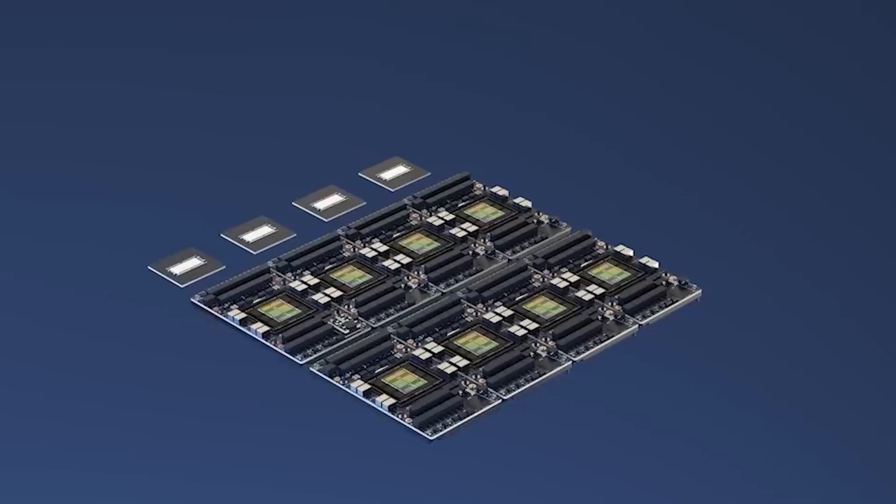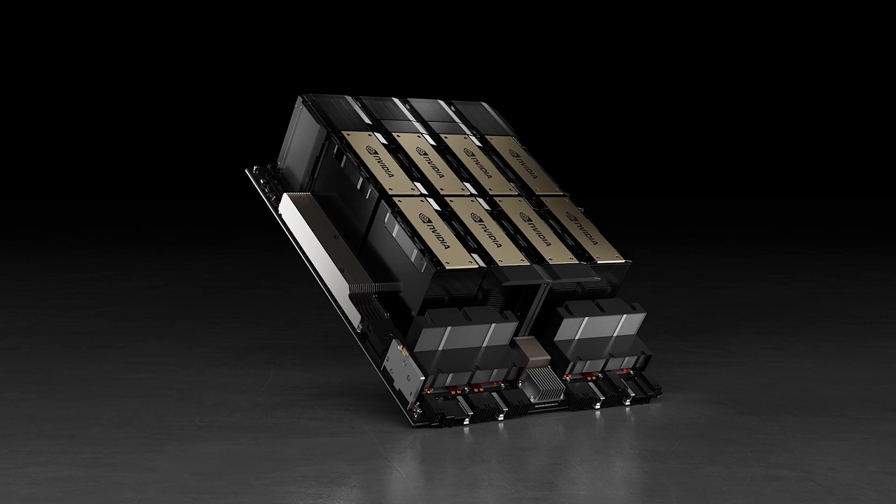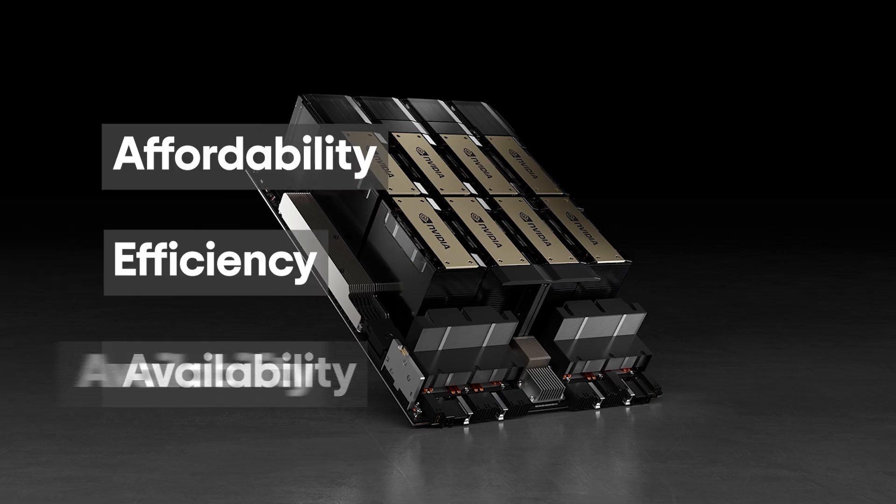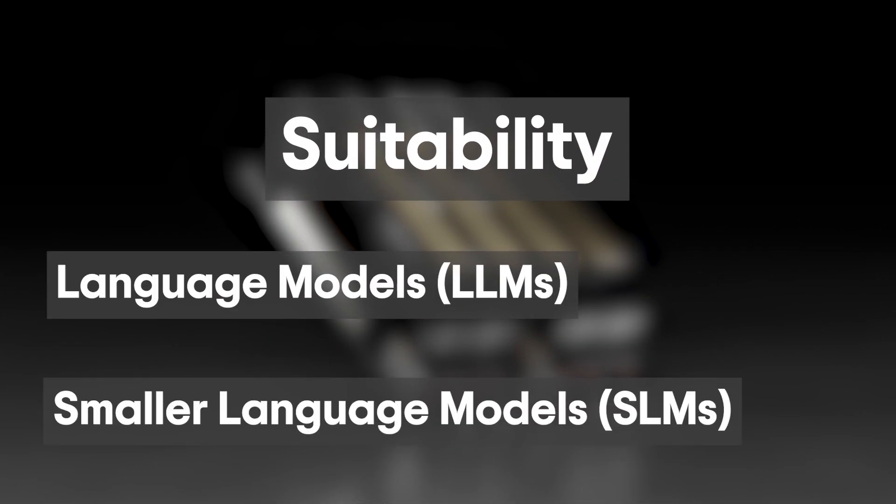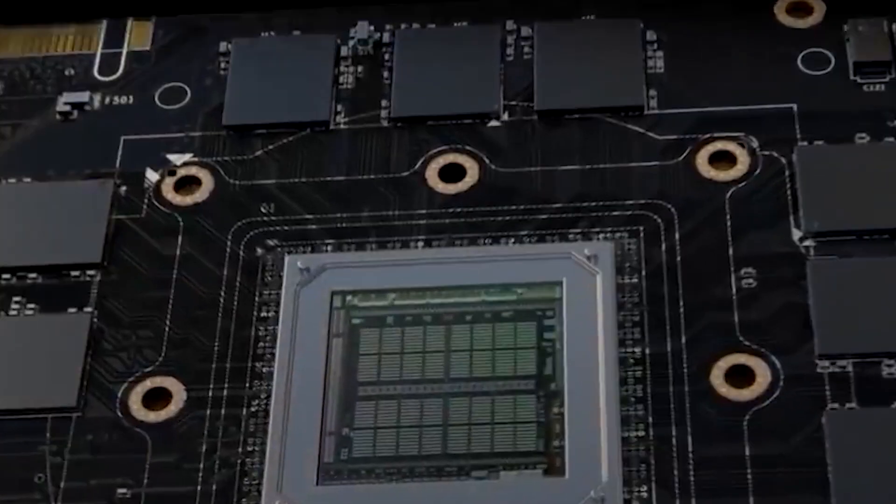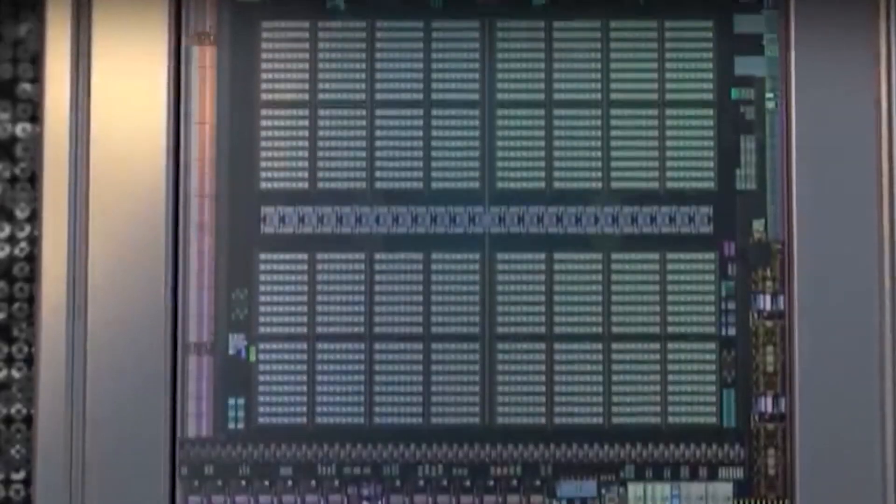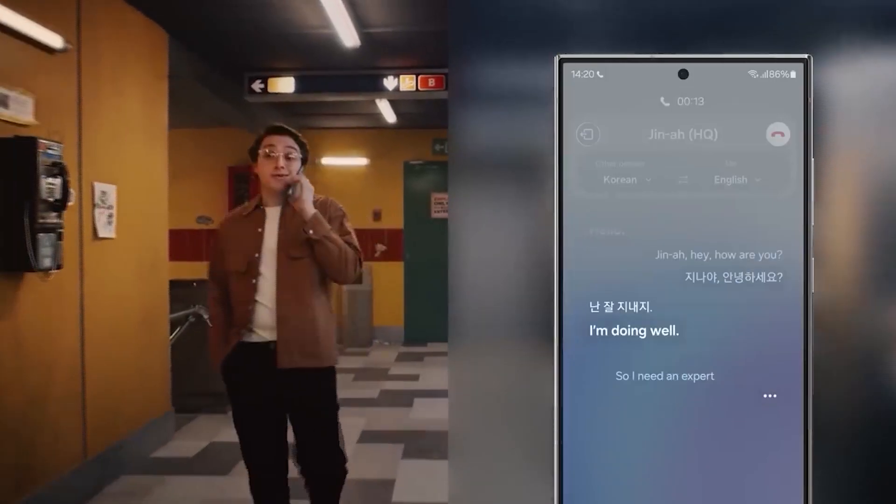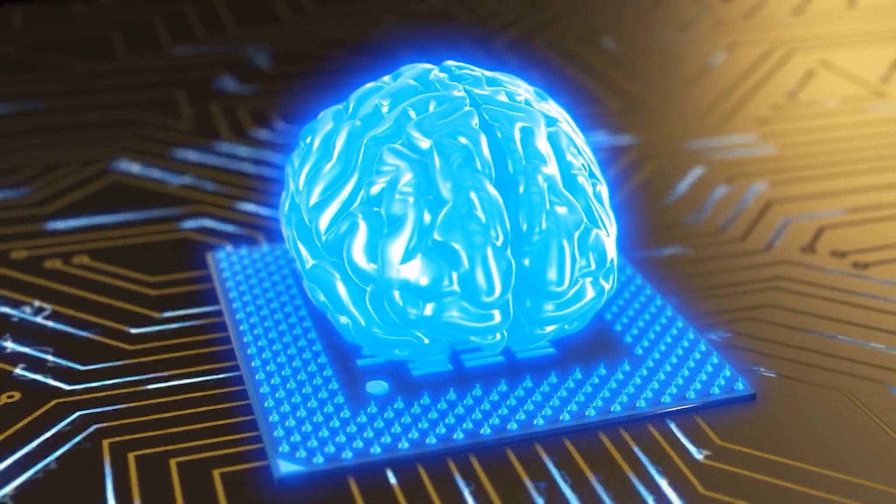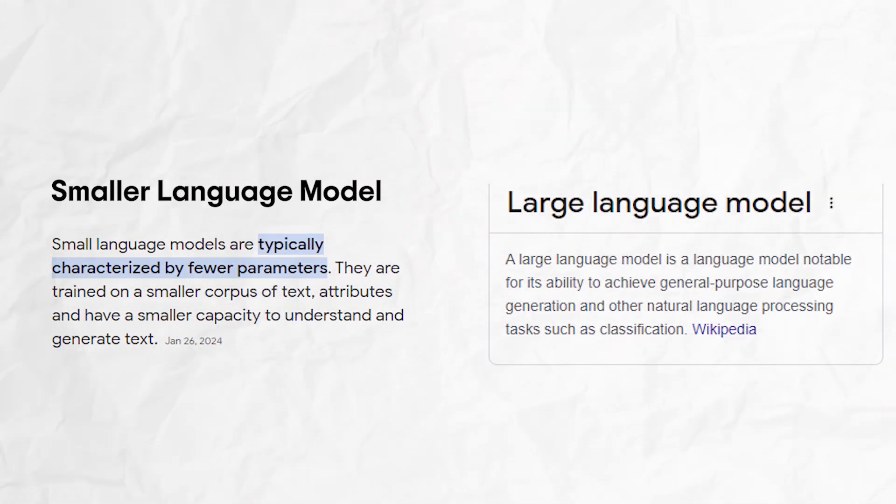Now, comparing the C-Transformer chip with its counterparts, such as the NVIDIA H100 GPU, involves considering affordability, efficiency and availability alongside their suitability for large language models or LLMs and smaller language models or SLMs. The C-Transformer is designed for ultra-low power consumption, making it a potentially more affordable and efficient choice for devices running AI applications, particularly beneficial for mobile and embedded systems. Its architecture aims at neuromorphic computing, mimicking the human brain's neural structures, which could offer advantages in running both LLMs and SLMs efficiently.